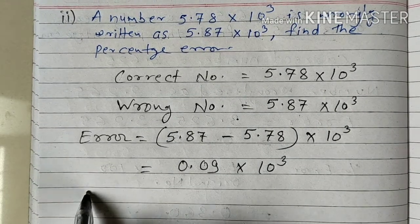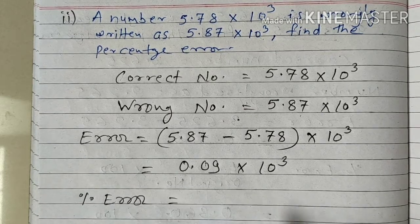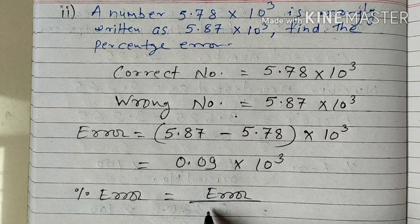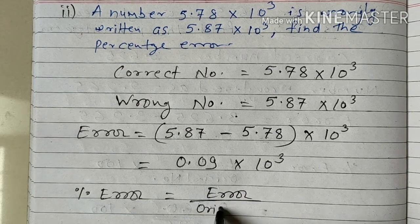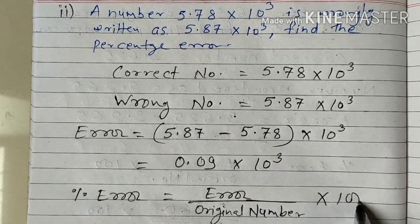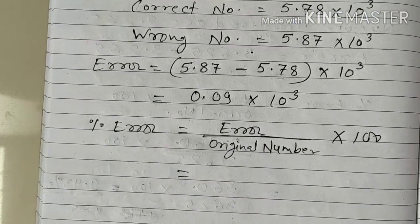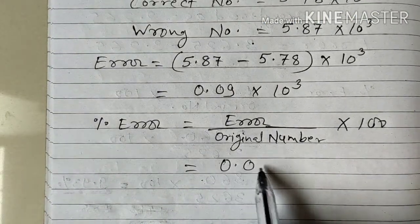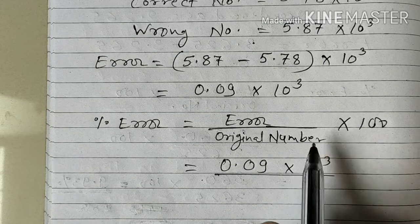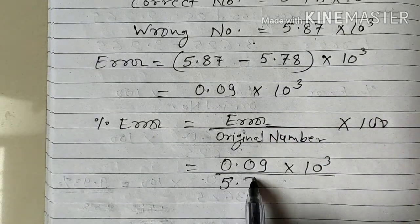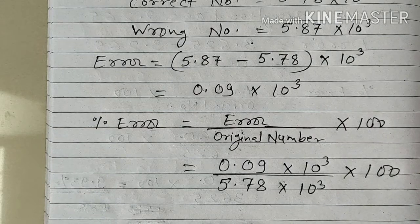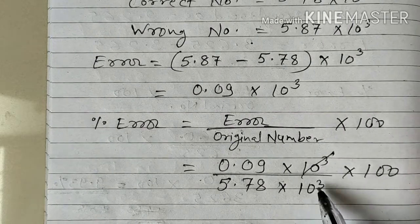Let us find out the percentage error. We have the formula: error upon original number multiplied by 100. The value of error in our question is 0.09 multiplied by 10 raised to 3, upon the original number, which is 5.78 multiplied by 10 raised to 3, and it is multiplied by 100. The 10 raised to 3 gets cancelled.